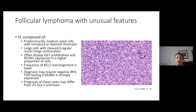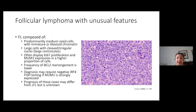There's a new entity known as follicular lymphoma with unusual features. This is usually composed of medium-sized cells that can have either immature or blastoid chromatin, or large cells with cleaved or irregular nuclei — which actually look like very large centrocytes. Both are considered unusual features of follicular lymphoma and may need to be discussed in the diagnosis. These lymphomas usually have higher KI-67 proliferation index and often increased MUM1 expression. BCL2 rearrangement is lower in these entities, and the diagnosis may require a negative IRF4 FISH, because if MUM1 is strongly expressed the possibility of a large cell lymphoma with IRF4 rearrangement needs to be excluded.